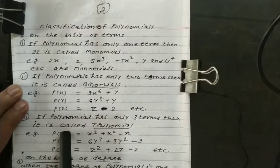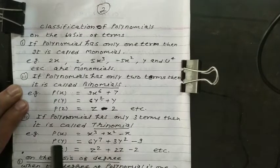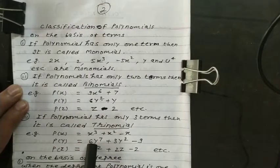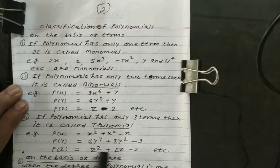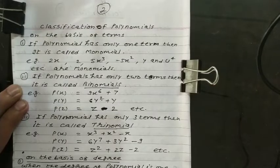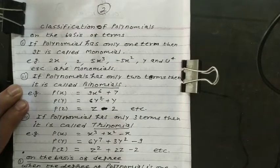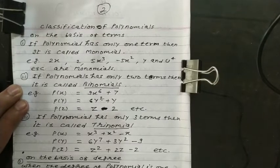Next, if a polynomial has only three terms, it is called trinomial. For example, p(x) has three terms: 1, 2, 3. In the second example, 1, 2, 3—three terms. And 1, 2, 3—three terms. p(x), p(y), p(z)—these three polynomials carry three terms. Therefore, it is termed as trinomial.